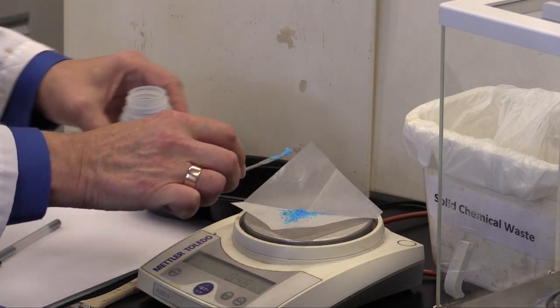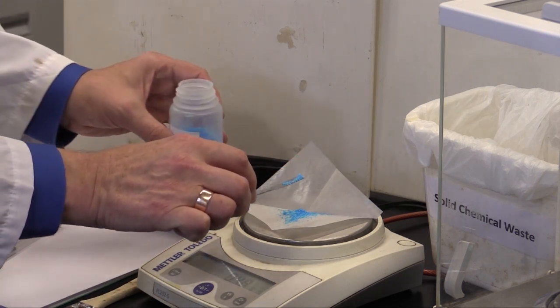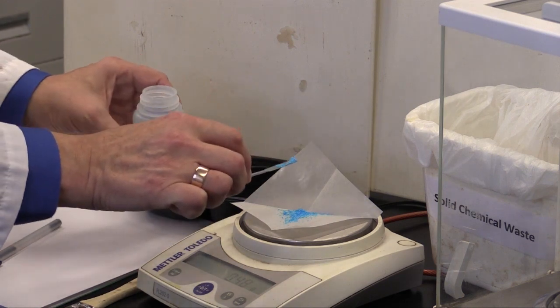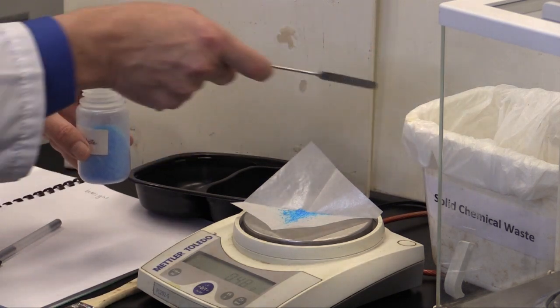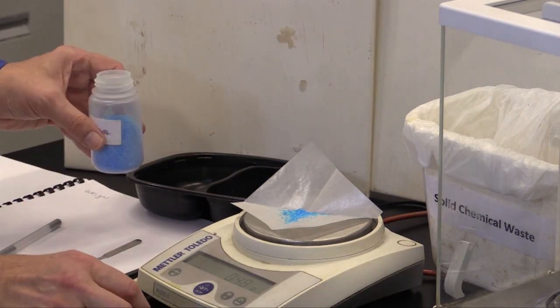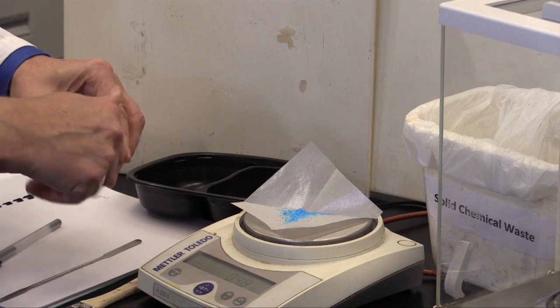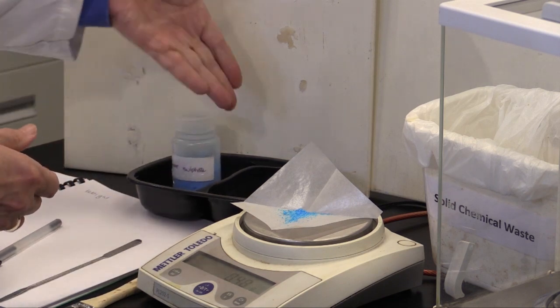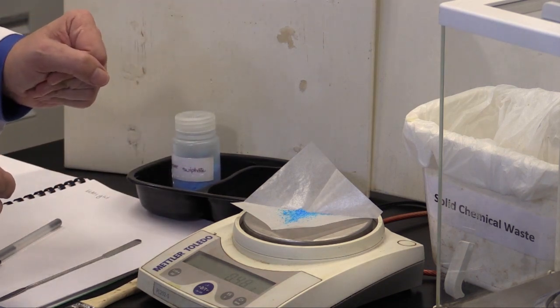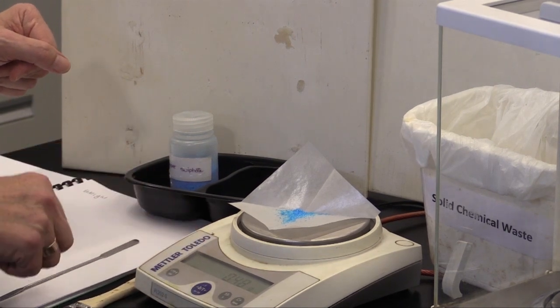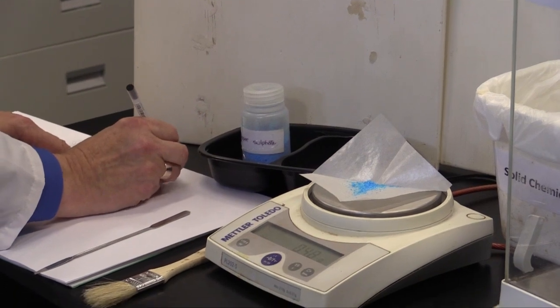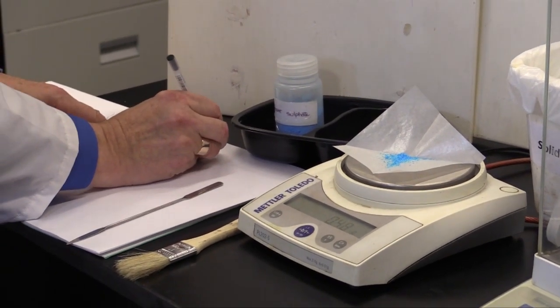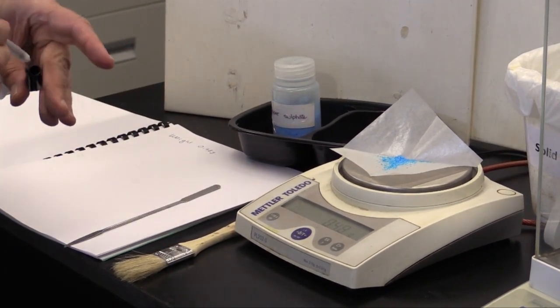Now this that I have taken out of the flask never goes back in. When you have taken something out, if you're not using it, it goes into the solid chemical waste, which will always be right next to the balances. Then we cap the chemical and put it back in the tray that it sits in. At this point, I've got 0.48 grams and I take a note of that weight here in my notebook, 0.48 grams.